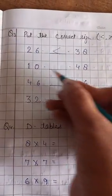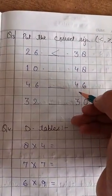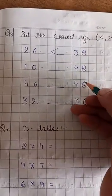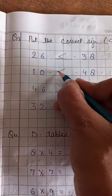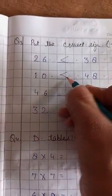Next one is 10 and 48. Which one is bigger? Means burger? Yes, 48. Open your mouth.